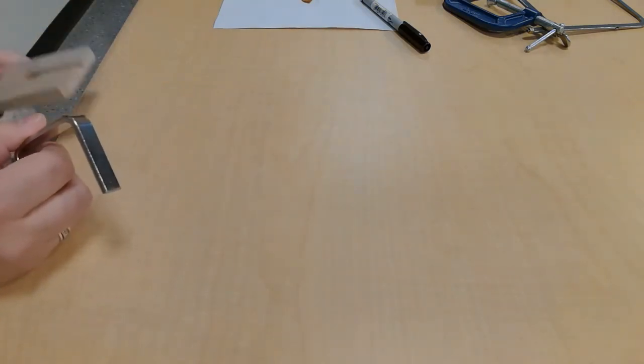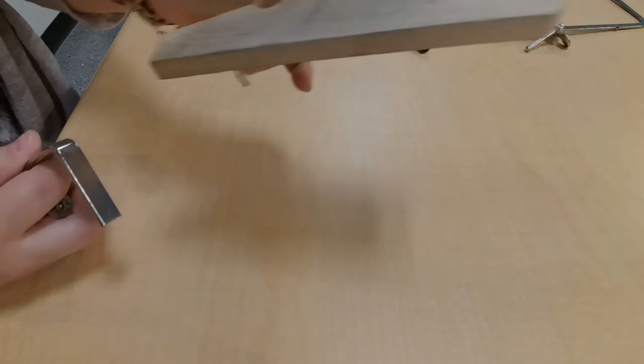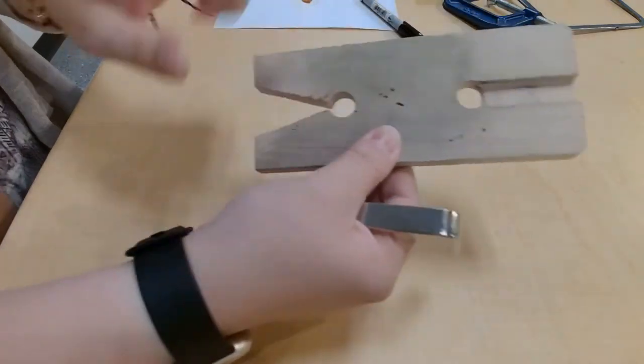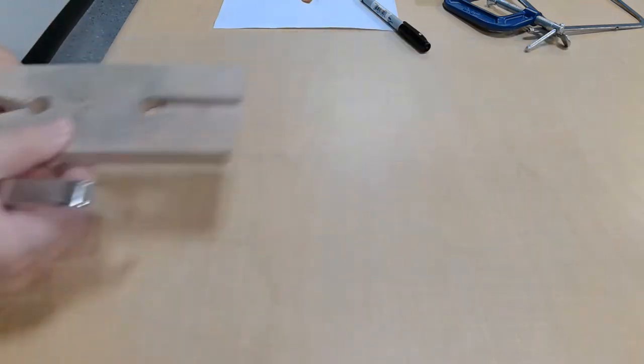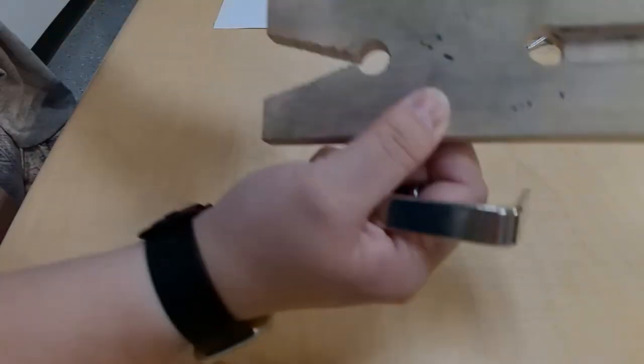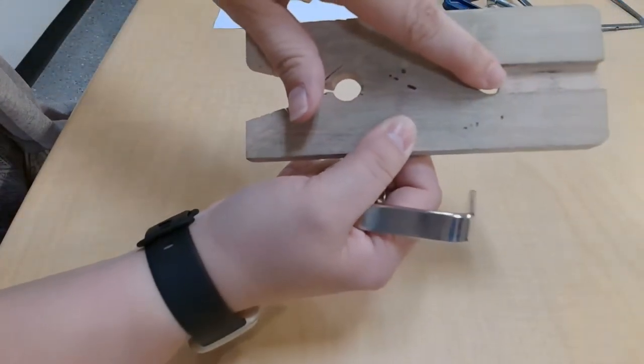This is called a bench pin, and we need it on the table. This is where we're working. So I have my hole. This is the area that I'm going to be working in. It's going to be sticking off the table. This part is what gets attached to the table.